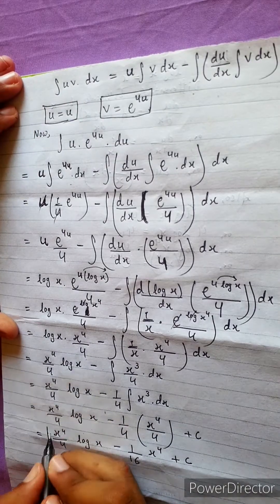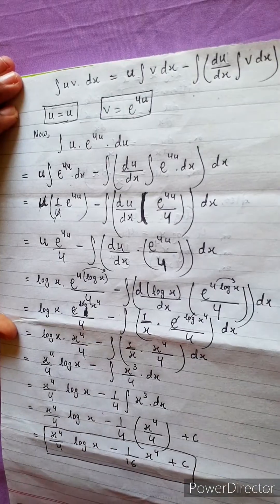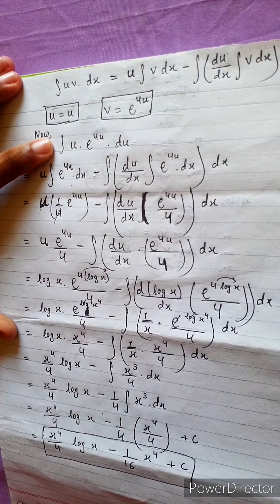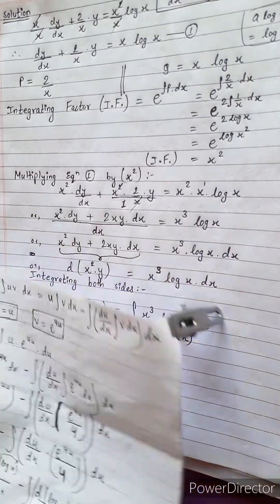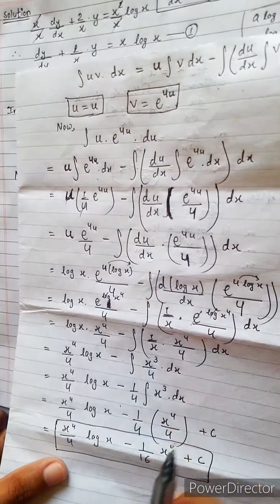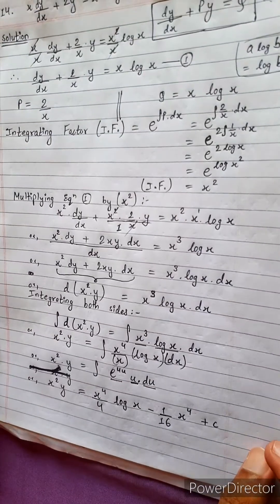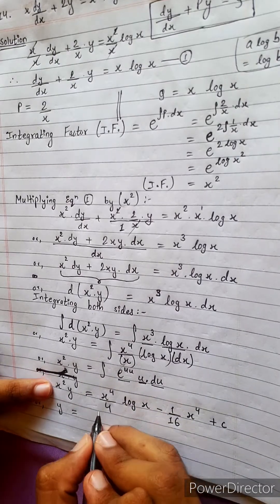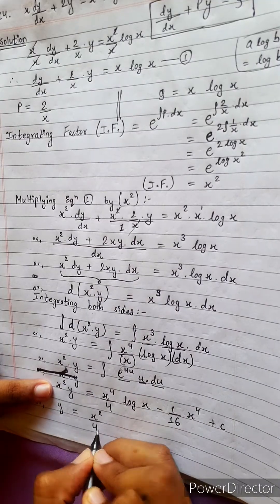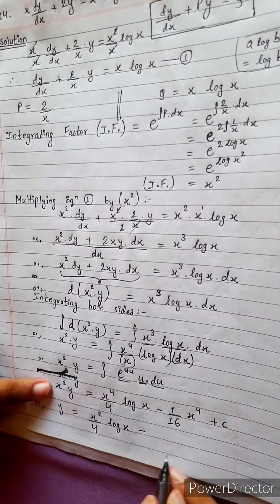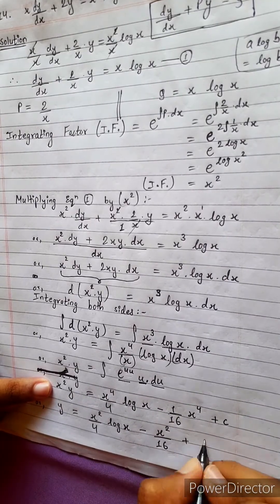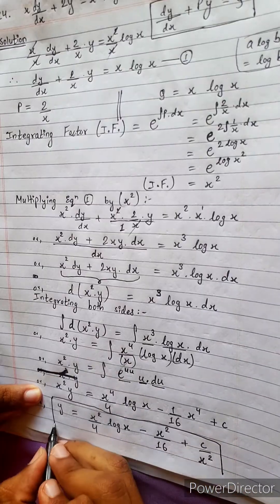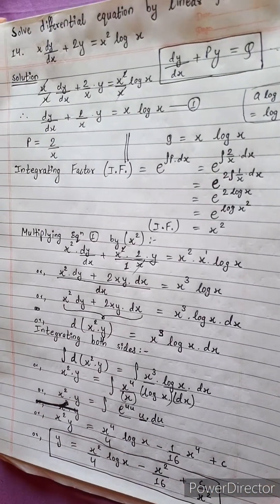Dividing both sides by x², the final answer is: y = x²/4 · log x − x²/16 + c/x². That is the solution to the differential equation.